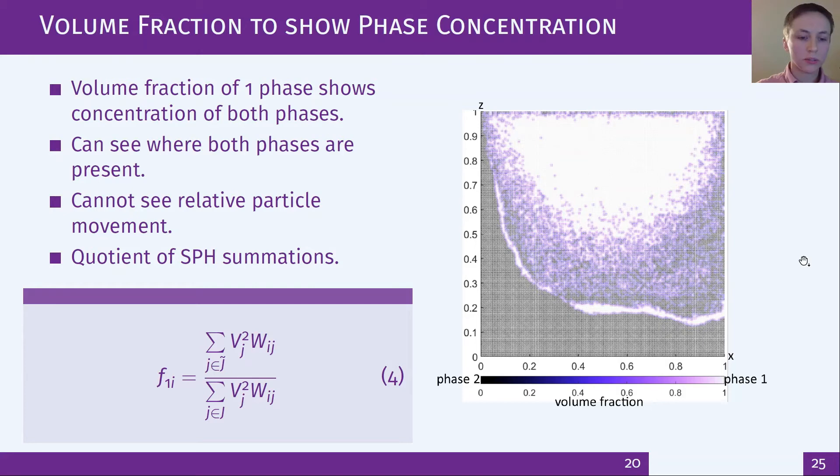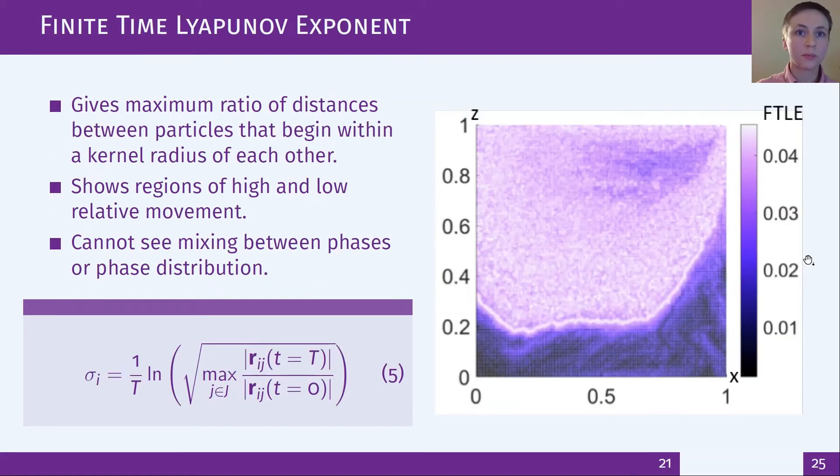The finite time Lyapunov exponent shows the movement of particles through a maximum ratio of the distances of particles that start close together. It gives a good understanding of the flow structure so in particular it can be useful for single cases but you cannot see the distribution of different phases or how well mixed they are.